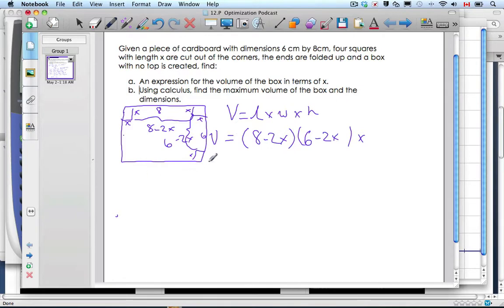Let's multiply this out. So I get 48 in parentheses minus 16x minus 12x plus 4x squared, multiply it by x. If we put it all together in the order of exponents, I go 4x³ minus 28x² plus 48x. And so this is part a completed, an expression for volume of the box in terms of x.